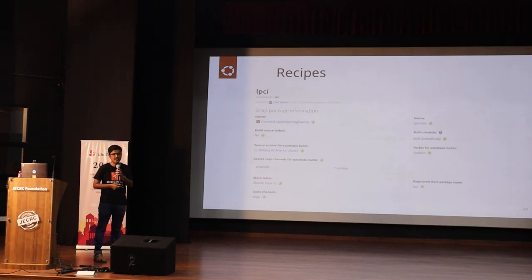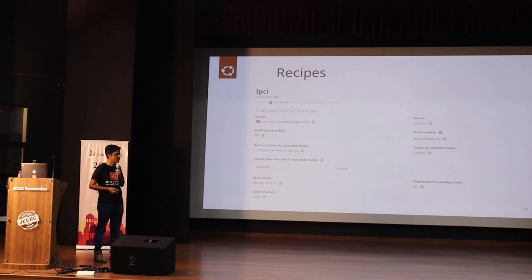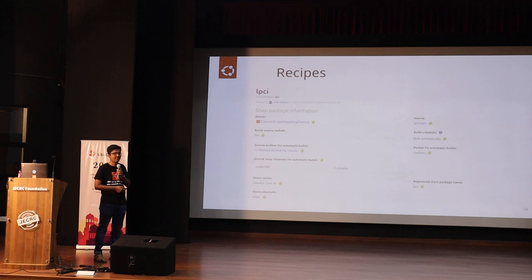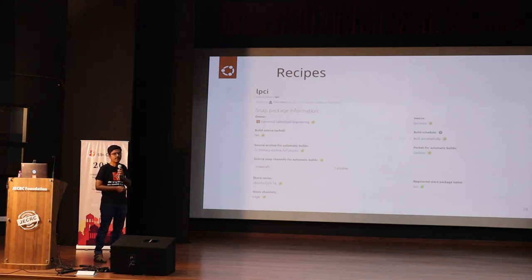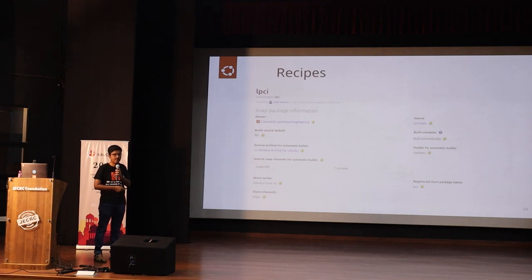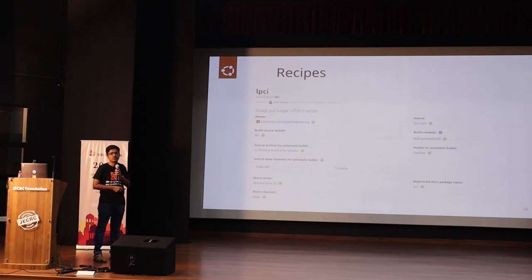This screenshot shows the recipe for a snap called LPCI, which I'll talk about later. It automatically builds the snap whenever code changes are made to the underlying repository, runs the test suite, and if everything passes, automatically uploads it to the snap store. It also lets you customize channels — a concept from the snap store, charm hub, and other Ubuntu ecosystem stores. The edge channel corresponds to a development channel, giving you control over testing before releasing to all users.